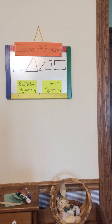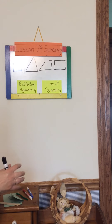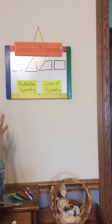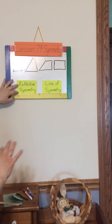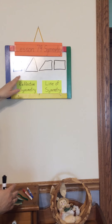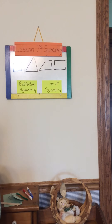Good morning, fourth grade. Today we're learning lesson 79, symmetry. Symmetry is kind of a fun little activity. It is when we find where one side is mirrored to the other. It's called reflective symmetry, and a mirror image is reflective. And so if they look the same on both sides, then they are symmetrical.